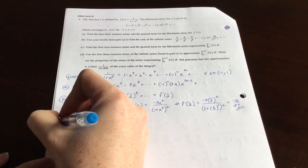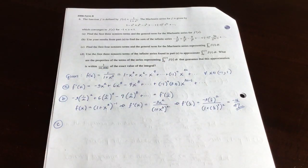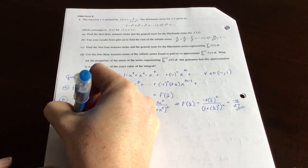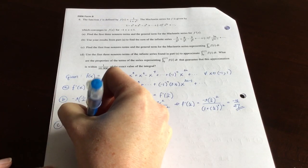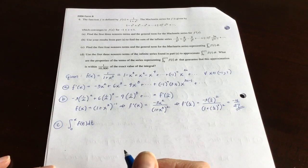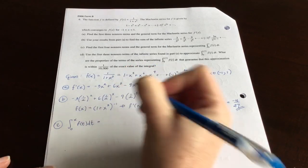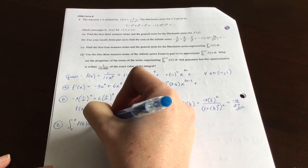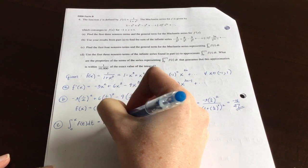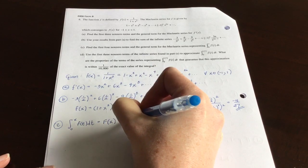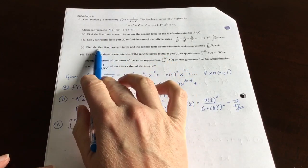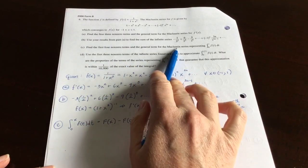Let's move on to part C. It says, find the first four non-zero terms and the general term for the Maclaurin series representing the integral from zero to x f of t dt. There are a couple different ways to figure this out. I like kind of being on the cautious side here. So I would say that this is the same as the anti-derivative of f with x plugged in, take away the anti-derivative of f with zero plugged in.